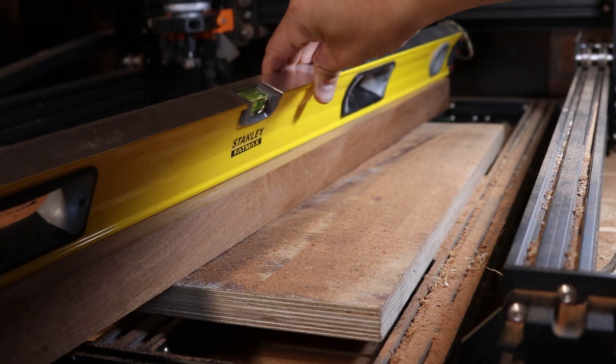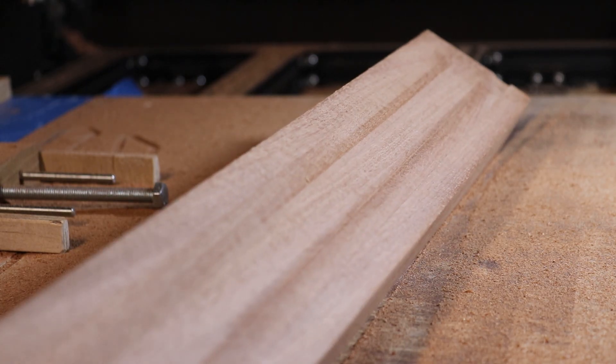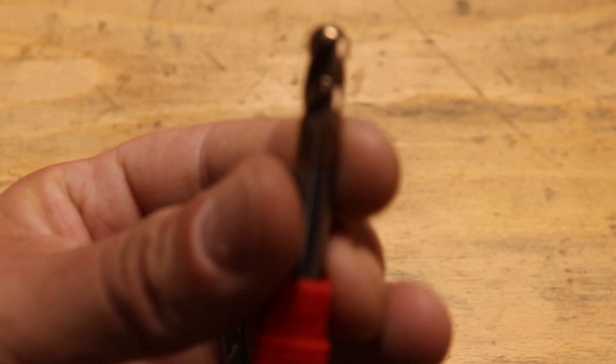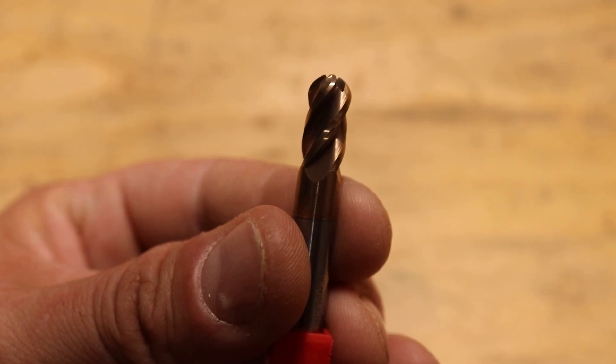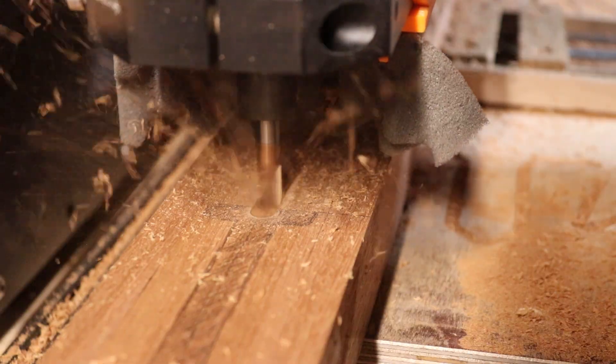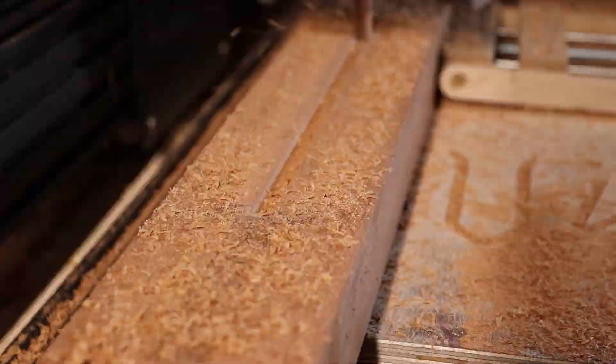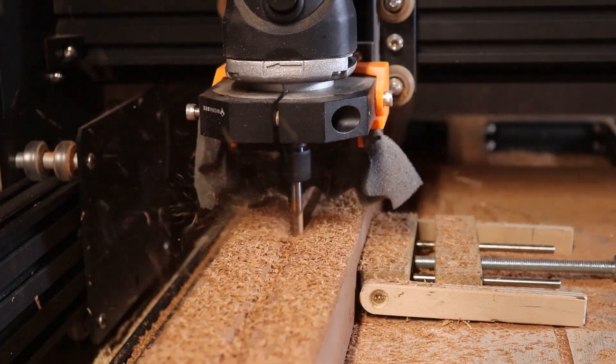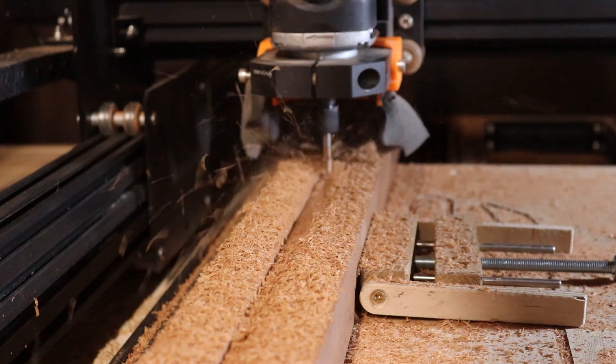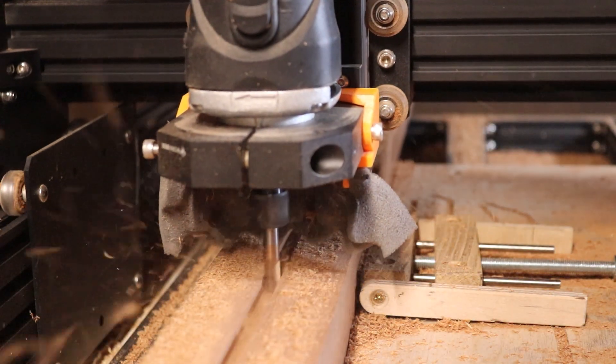Once everything's nice and flat, it's now time to carve the track. To carve the track you're going to need a ball nose end mill. This cutter is 7mm in diameter, exactly the same diameter as the spear I'm using. Carving the track is arguably the most important part of building the gun. If you get this wrong the gun's not going to fire straight. And what did I do? I fucked it up didn't I?